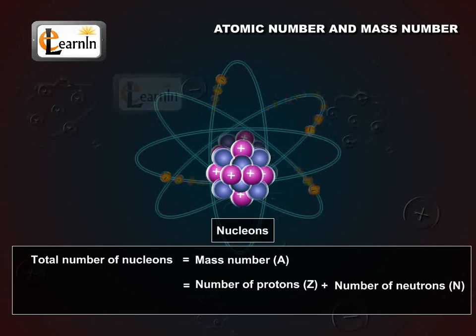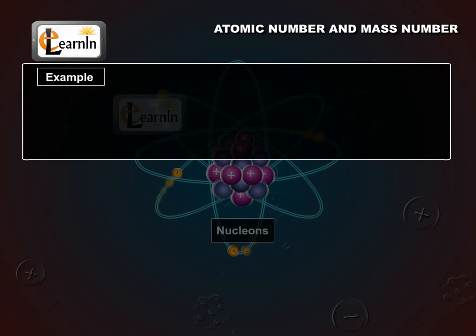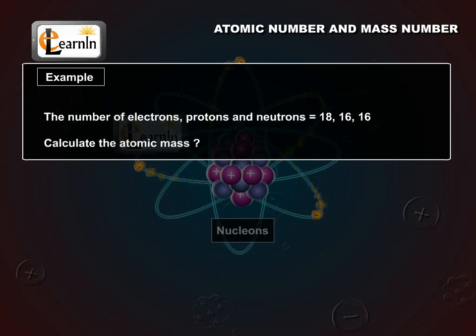Let's apply this to an example. The number of electrons, protons and neutrons in an atom are equal to 18, 16 and 16 respectively. Calculate the atomic mass.